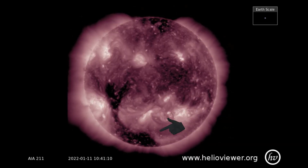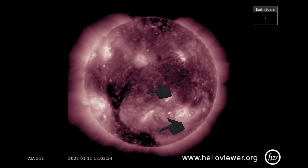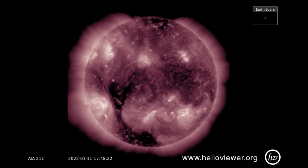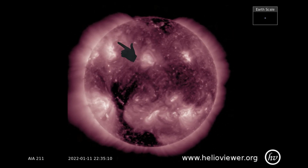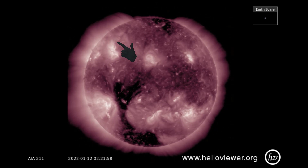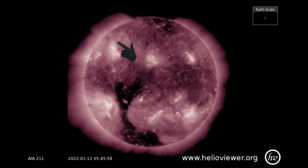The coronal holes can be seen on this SDO211 filter. Look just here, and you can see the corona fluctuate as a flare erupts.